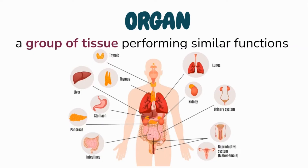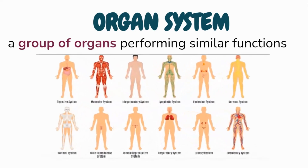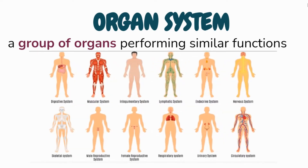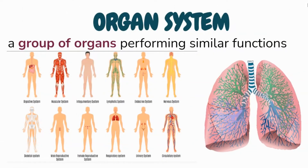Anatomy is an example of a biological field concerning this level. An organ system is a group of organs performing similar functions. They work together to carry out specific bodily functions. The respiratory system, for example, uses the lungs, airways, and respiratory muscles to inhale oxygen and release carbon dioxide in animals.